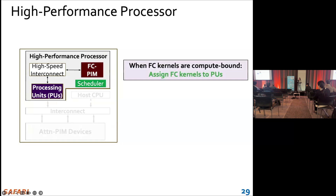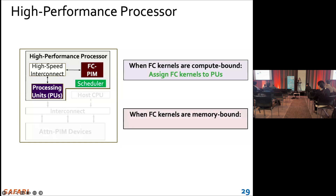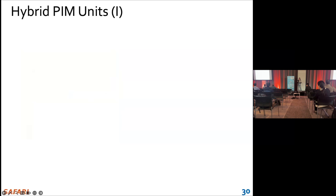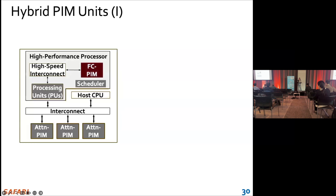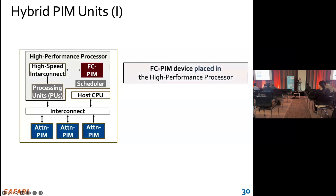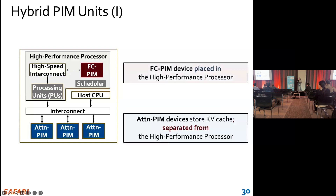And when the FC kernels are memory-bound, we assign all the kernels to the FC PIM. In the PAPI architecture, we have FC PIM and attention PIM. FC PIM is placed in the high-performance processor, and the attention PIM stores the KV cache, separate from the high-performance processor.